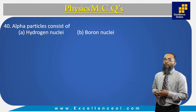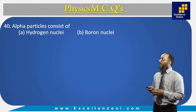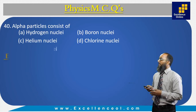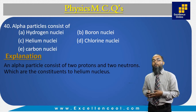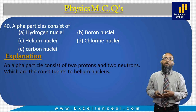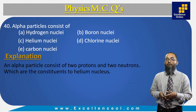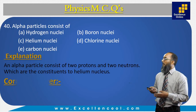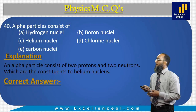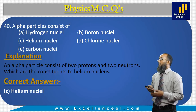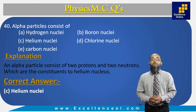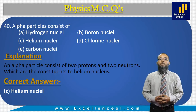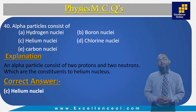The last question: alpha particles consist of — an alpha particle contains 2 protons and 2 neutrons, forming a helium nucleus. The correct answer is C: helium nuclei. Thank you, students, and best of luck for the upcoming exams.